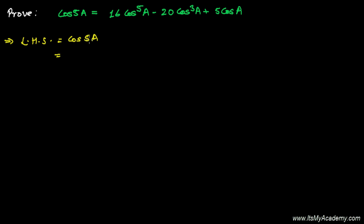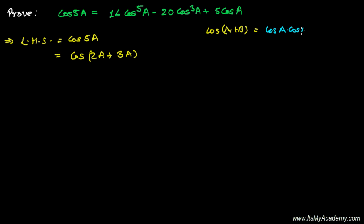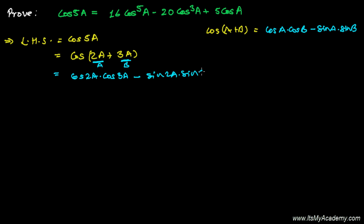My dear friend, can you solve this cosine of 5a? We don't have any formula for cosine of 5a. So what we have to do: we'll break this 5a into cosine of (2a + 3a). Now we break this, and this will be something like cosine of (a + b). So using the formula for cos(a+b), we'll treat 2a as 'a' and 3a as 'b'. It will be cosine 2a times cosine 3a, minus sine 2a times sine 3a.